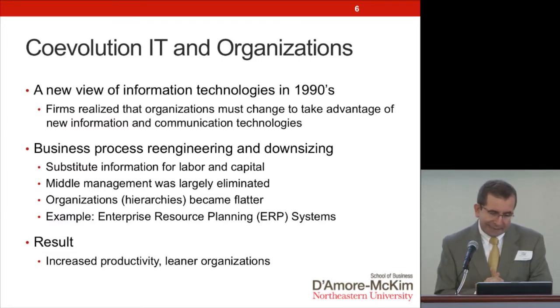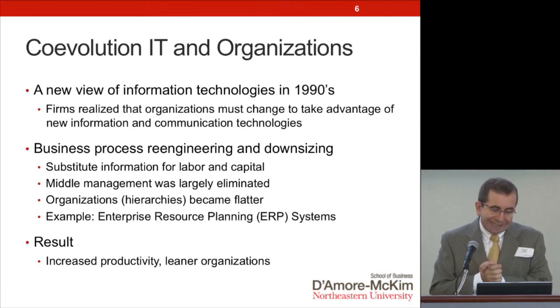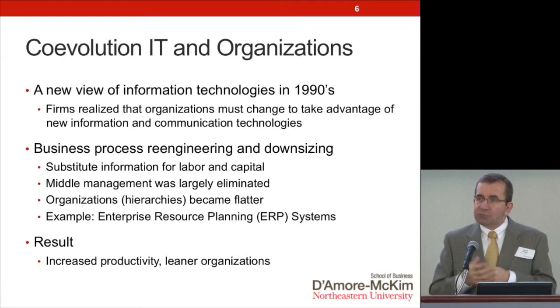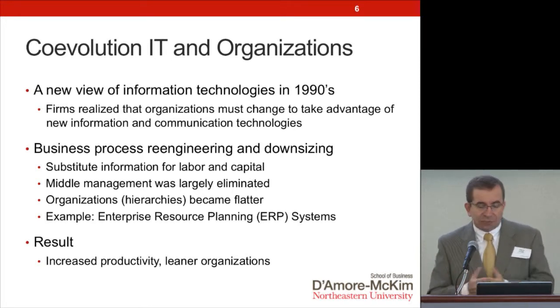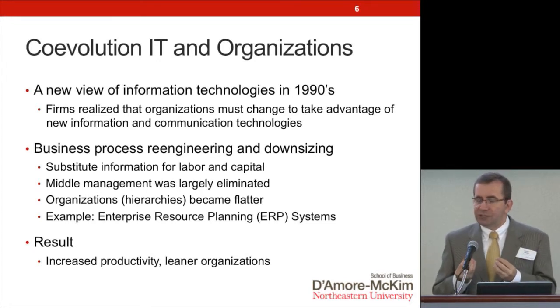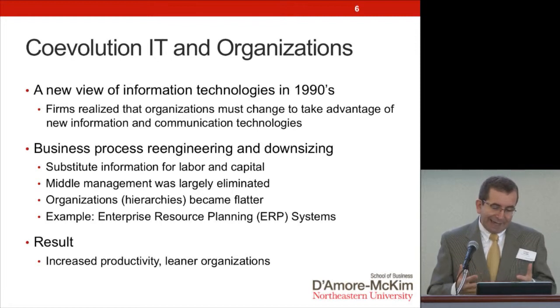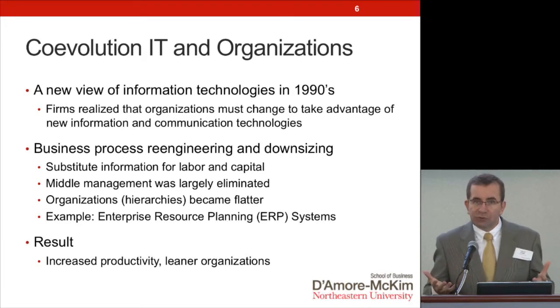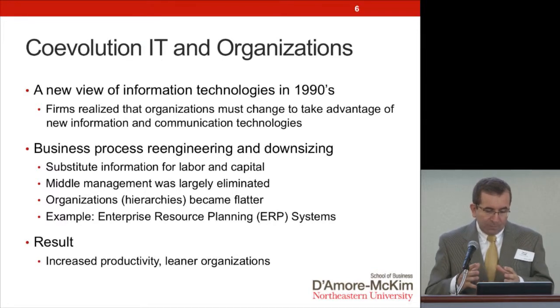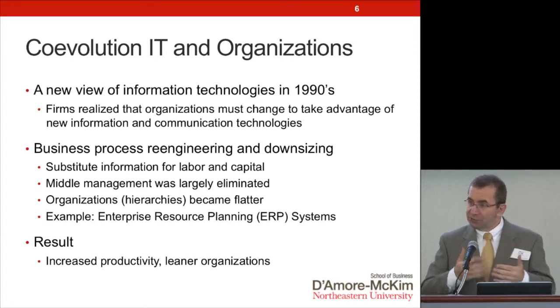But it also had a dark side. In the 90s, organizations started downsizing by redesigning their processes to take advantage of new information technologies. As a result, middle management was eliminated, because the main task of middle management was serving as a conduit of information between higher and lower levels of the hierarchy. When IT was fully leveraged, there was no need for middle management anymore. An example is ERP systems, which streamline information flows across an entire organization, resulting in increased productivity and leaner, flatter organizations.